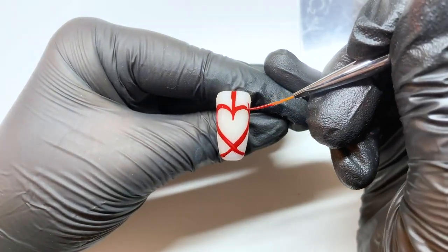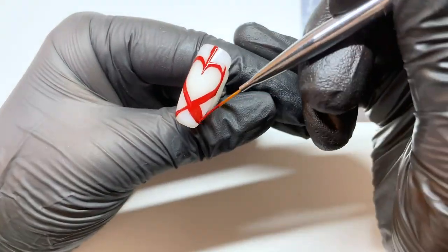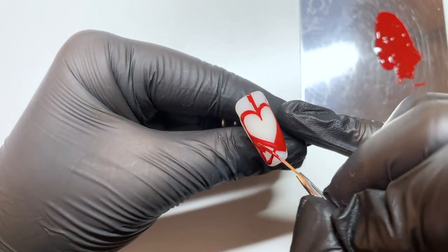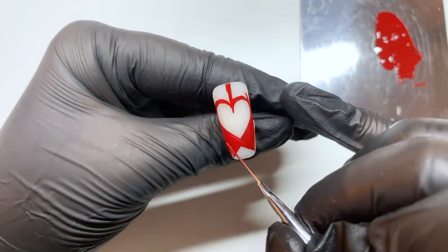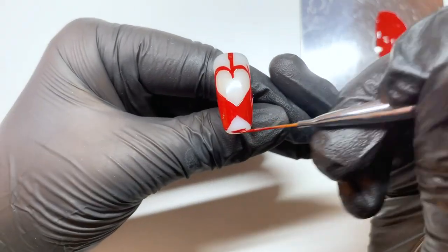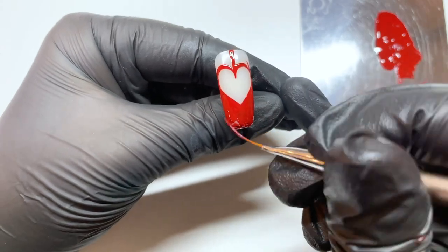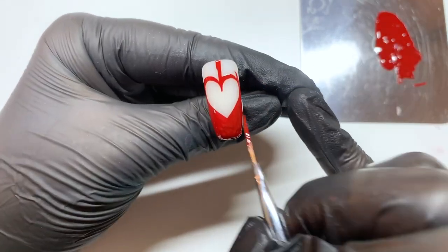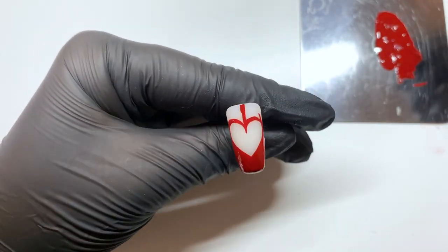Once I'm happy with the shape I have created, I just like to fill in each of those corners that I've created with my guidelines with the high pigment gel. It is important that you don't layer on the high pigment gel too thickly as it could crinkle in the lamp. That's why I like to do it corner by corner.